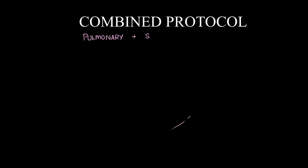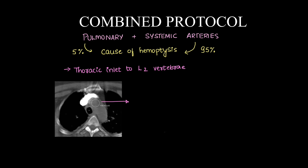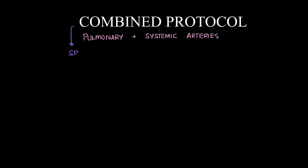The combined protocol is a newer technique for hemoptysis where we visualize both pulmonary and systemic arteries, because both can be the cause. Bronchial arteries are the major cause, but the pulmonary artery accounts for about 5% of cases. Coverage is from the thoracic inlet to L2 vertebra, with the ROI placed in the ascending aorta.